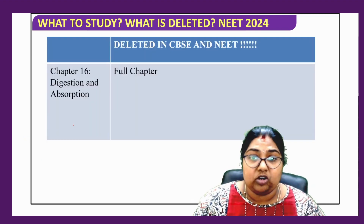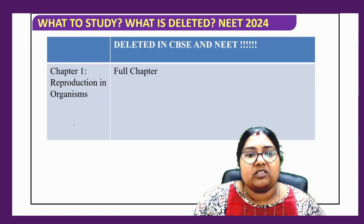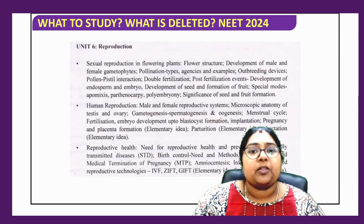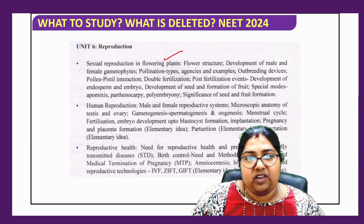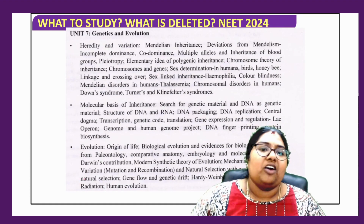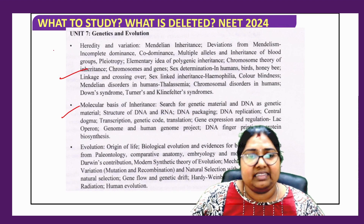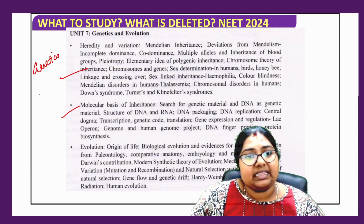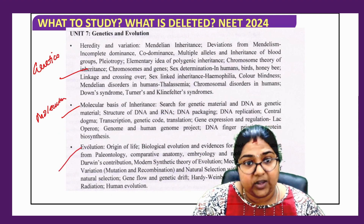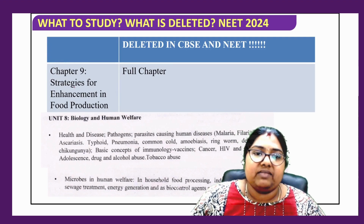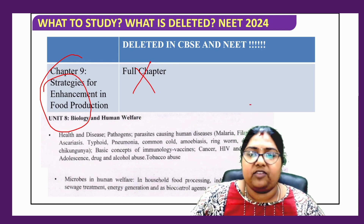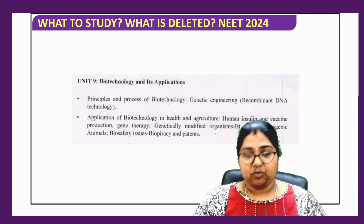For Class 12, reproduction in organisms is totally deleted. You have only sexual reproduction in flowering plants — no change there. Human reproduction — no change. Reproductive health — no change. In Unit 7, genetics has high weightage and nothing is deleted. Molecular basis of inheritance — nothing deleted. Evolution — nothing deleted. Chapter 9, strategies for enhancement, is fully deleted; you only have to study human health and welfare and microbial health.